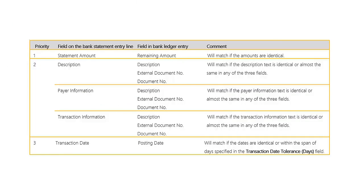First priority is the amount. Second priority, the field description, pair information, and transaction information are used. Third priority is the transaction date.